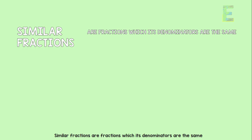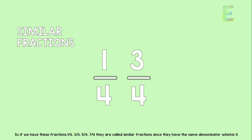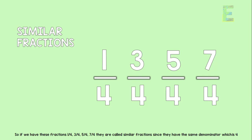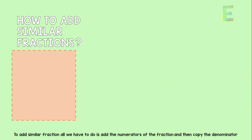Similar fractions are fractions which have the same denominator. So if we have these fractions — 1 over 4, 3 over 4, 5 over 4, 7 over 4 — they are called similar fractions since they have the same denominator, which is 4. Now, how do we add similar fractions?